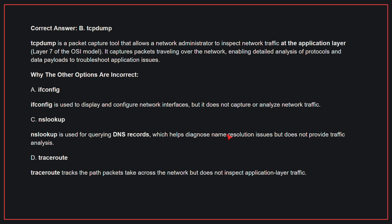Why the other options are incorrect? A, IfConfig: IfConfig is used to display and configure network interfaces, but it does not capture or analyze network traffic. C, NSLookup: NSLookup is used for querying DNS records, which helps diagnose name resolution issues but does not provide traffic analysis. D, Traceroute: Traceroute tracks the path packets take across the network but does not inspect application layer traffic. Therefore, the correct answer is B, TCP dump.